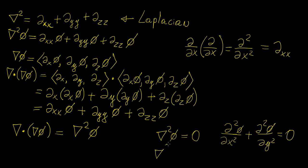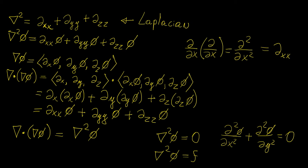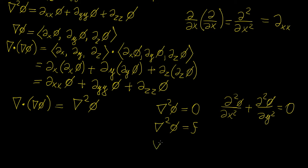Another type of equation where you might see this is called the Poisson equation, which is just like the Laplace equation but in the inhomogeneous case — so the Laplacian equals some other function. You will also have equations that combine these things together, such as the Laplacian equal to a partial derivative of the function with respect to time, which gives you something like the wave equation or the heat equation. Because this is such a convenient way of writing things, the Laplacian notation is commonly used to represent these equations in compact form.